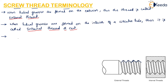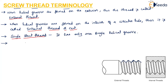If there is only one single helical groove, it is called a single start thread. If there are N number of helical ridges running side by side around a cylinder, they are known as N-start threads or multi-start threads.